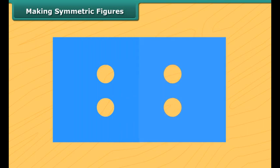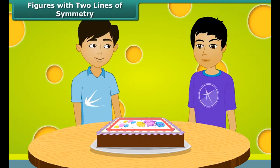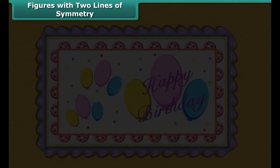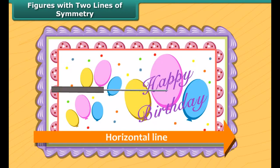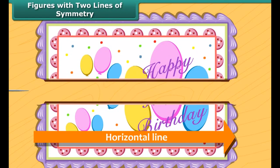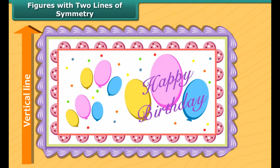Take a piece of cloth. Now cut two small circles from the middle of this piece. After unfolding, you can see a symmetric pattern that has a line of symmetry along which it can be cut into two identical parts.